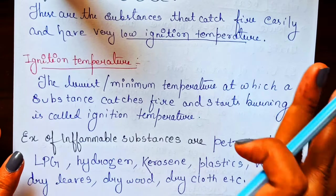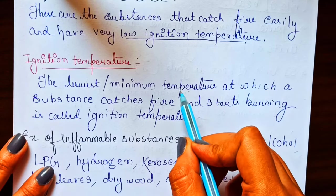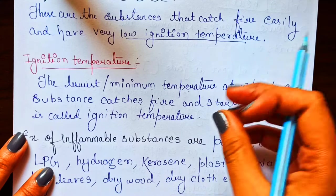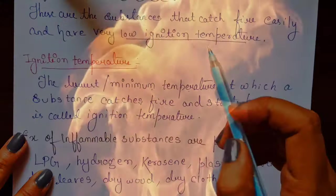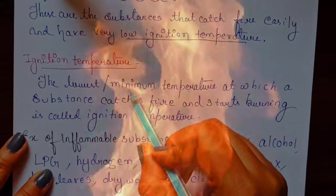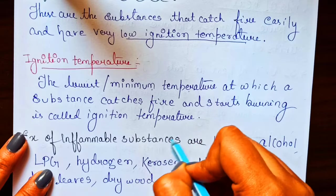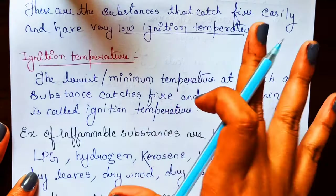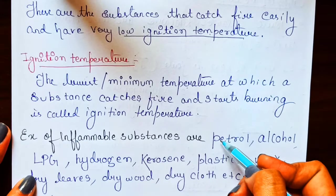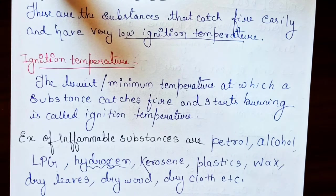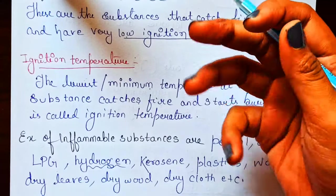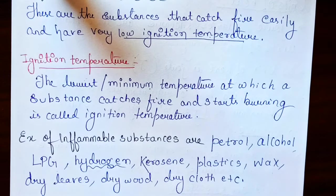Ignition temperature is the minimum temperature at which a substance starts to burn. Inflammable substances have a very low ignition temperature, which is why they catch fire easily. Examples of inflammable substances include petrol, alcohol, LPG gas, hydrogen gas, kerosene, plastic, wax, wet wood, and dry cloth. All of these burn very easily.